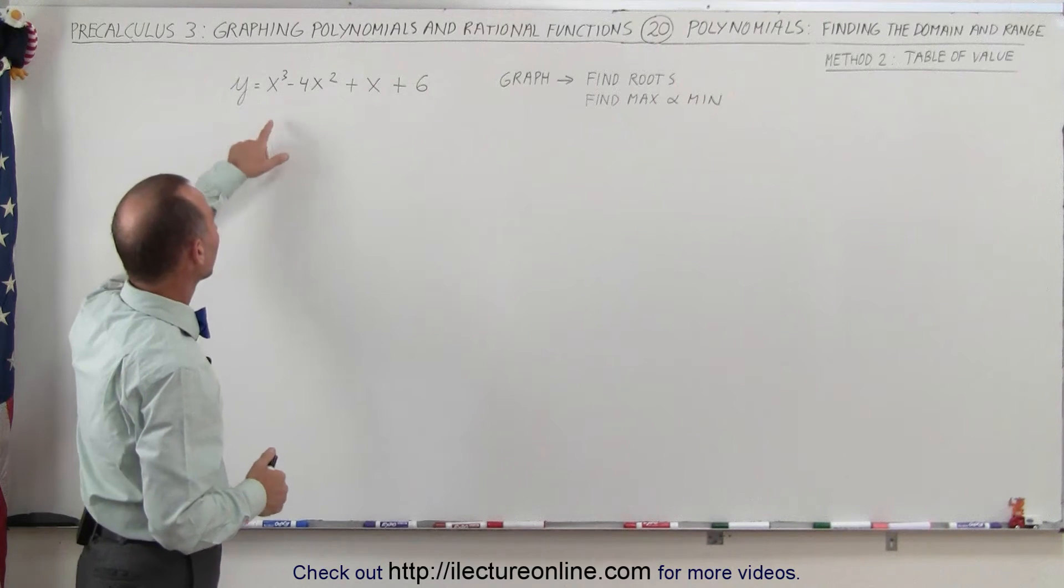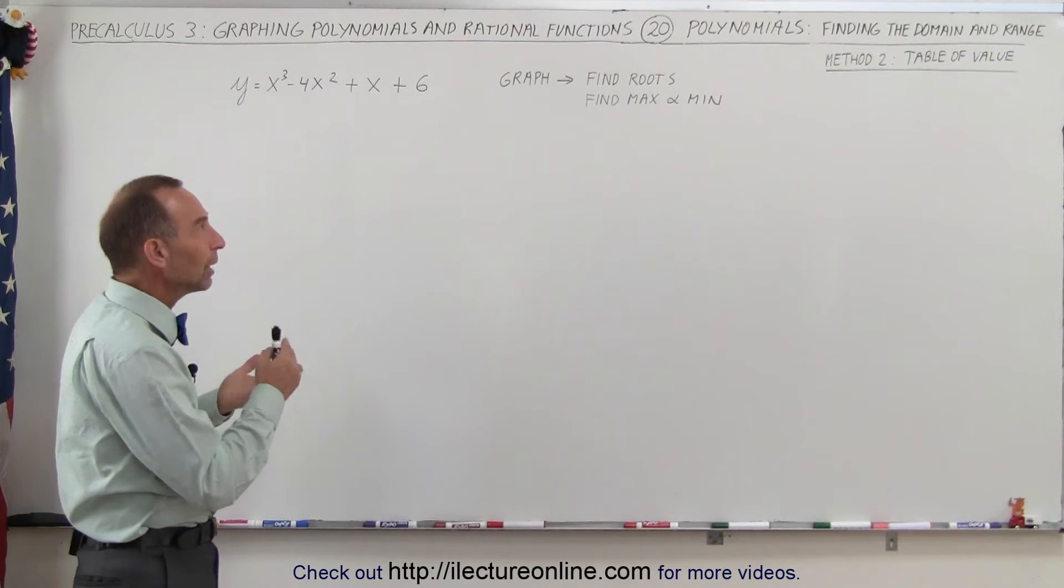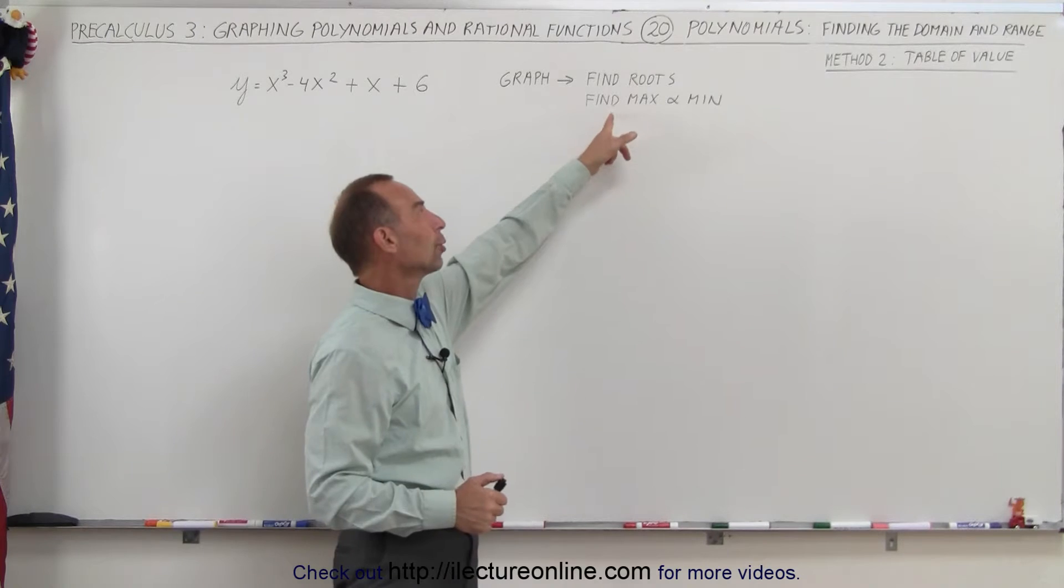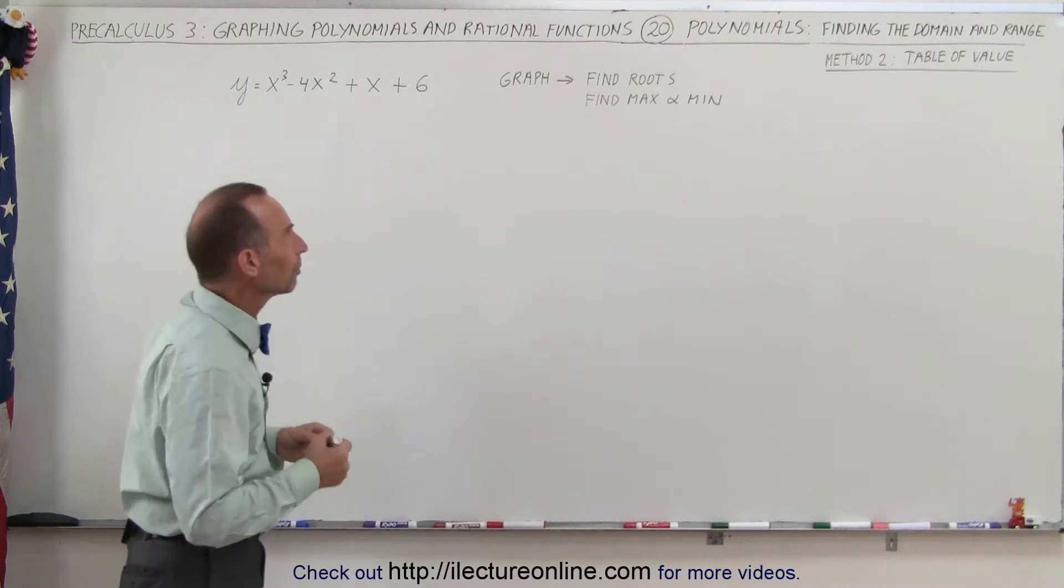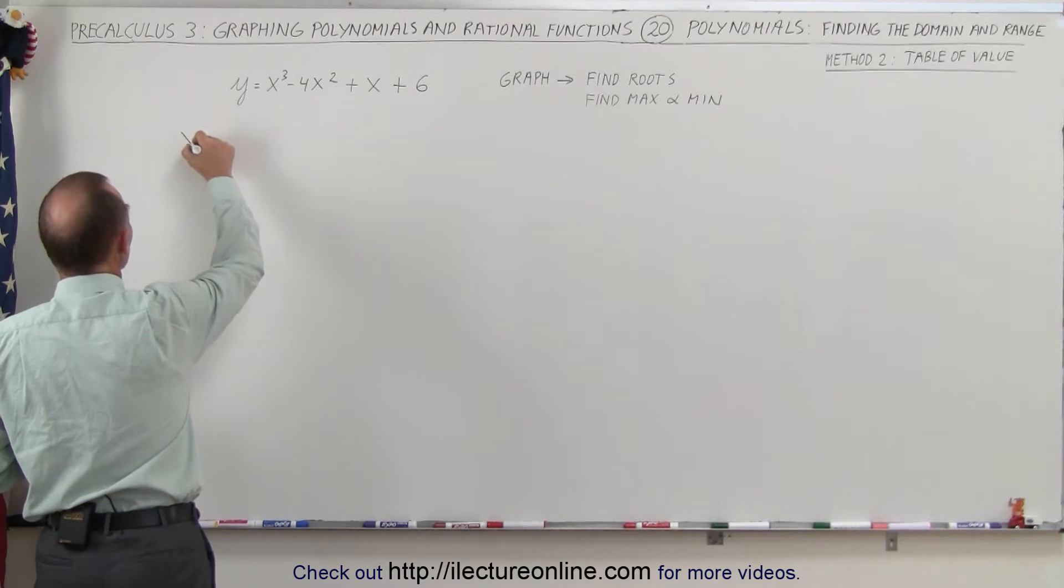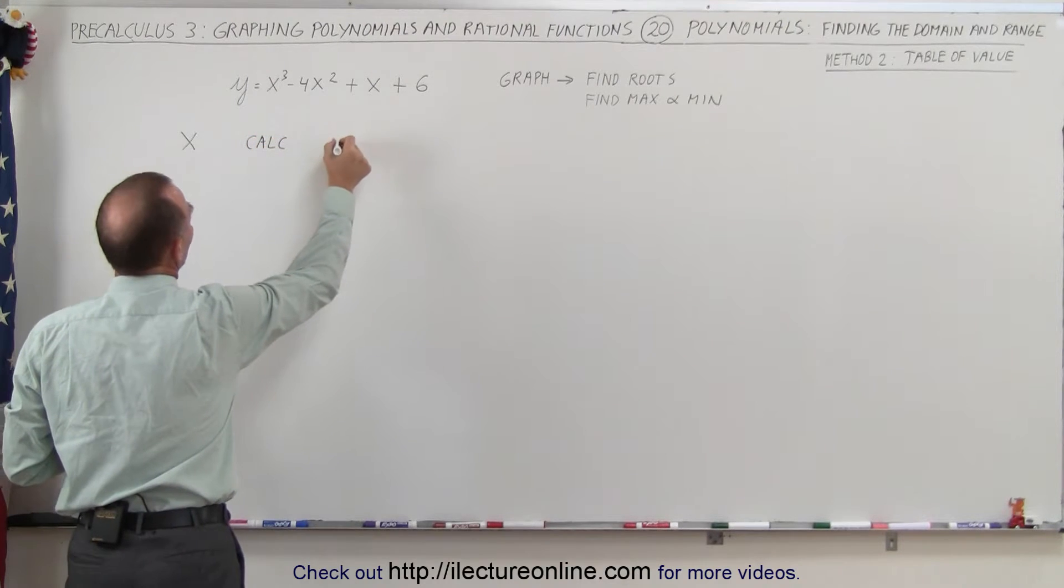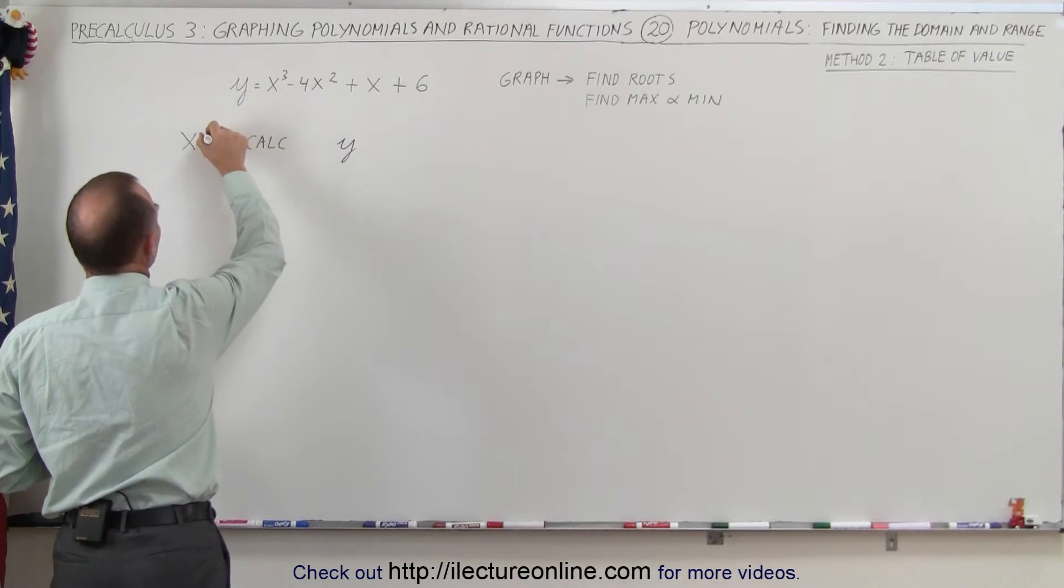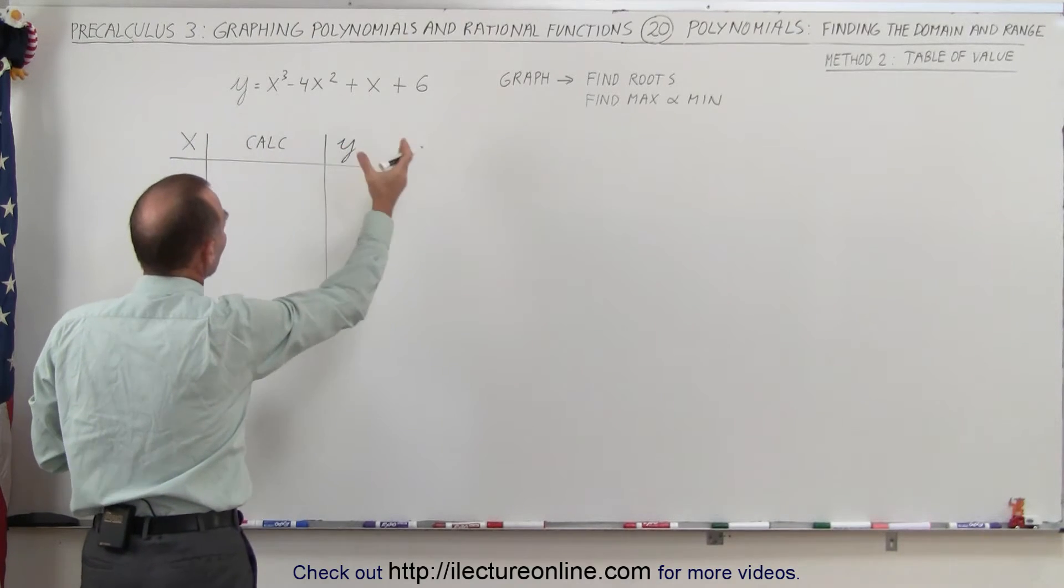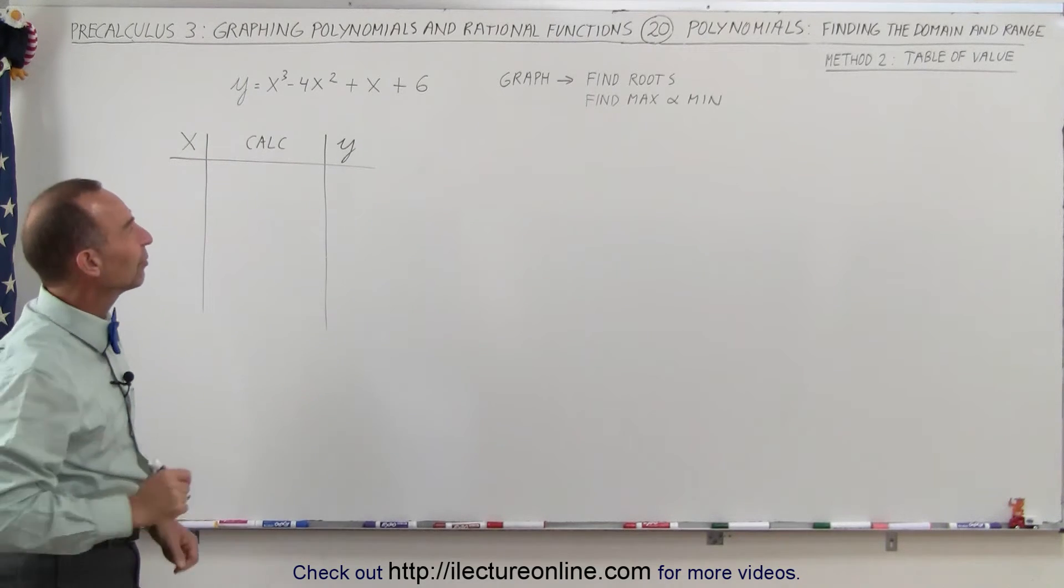We're going to plug in some values for X and then see what the corresponding values for Y are. We do that in order to be able to graph the polynomial and find the roots of the polynomial and find the max and min or the local max and min of the polynomial when we graph it. So set up a table of values. We plug in a certain value for X, we do the calculation here, and then we find the particular value for Y. The reason I put this middle column in there is because we're going to have to try and figure out what Y is equal to when we plug in a particular value for X and that takes a little bit of work.